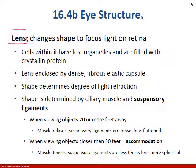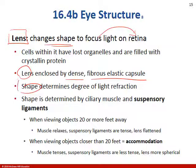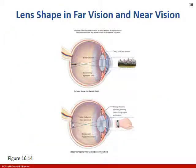The lens changes shape to focus light on the retina. The lens is enclosed by a dense fibrous capsule and the shape determines the degree of light refraction. We have suspensory ligaments and will look at whether those muscles relax or tense and what happens to the lens. Remember, light enters the eye, goes through the cornea, through the pupil, and the lens is what refracts the light.